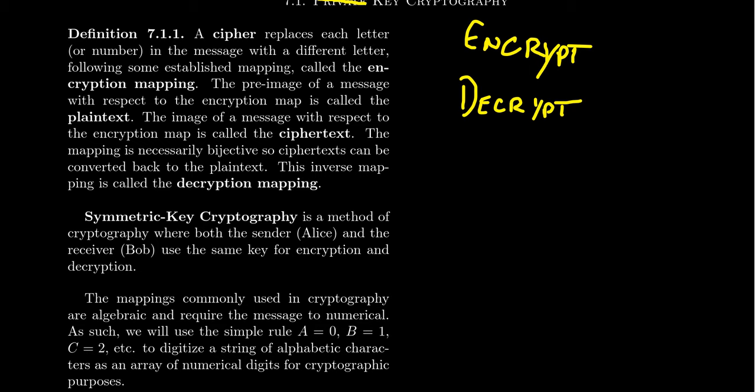In this lecture, we're going to introduce the idea of a cipher. From a cryptography point of view, from a mathematical point of view, a cipher replaces each letter or number or character in your alphabet with a different letter following some established mapping. This is going to be a function, and it's commonly referred to as the encryption mapping. The preimage of a message with respect to the encryption map is called the plaintext. The image of a message with respect to the encryption map is the ciphertext.